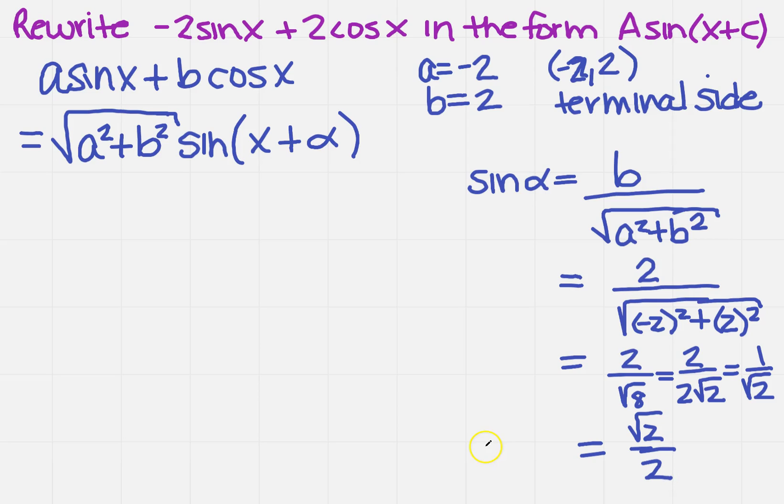So now that's sine of alpha. Does that help me? Sure it does, because now I can find alpha. So what is alpha that gives me √2/2 that would pass through the point (-2, 2)? Well, (-2, 2) is going to be in quadrant 2. So I need to find a value for alpha that is in quadrant 2 that equals √2/2.